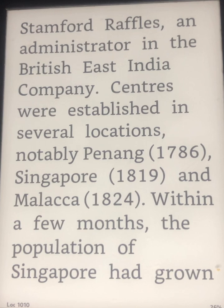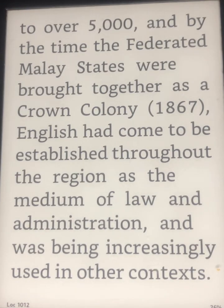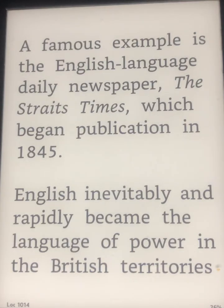Within a few months, the population of Singapore had grown to over 5,000, and by the time the Federated Malay States were brought together as a crown colony in 1867, English had come to be established throughout the region as the medium of law and administration, and was being increasingly used in other contexts. A famous example is the English-language daily newspaper, The Straits Times, which began publication in 1845. English inevitably and rapidly became the language of power in the British territories.